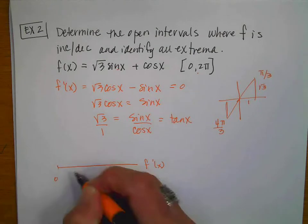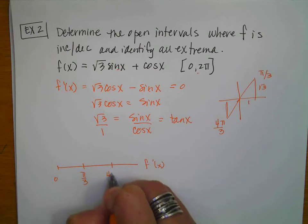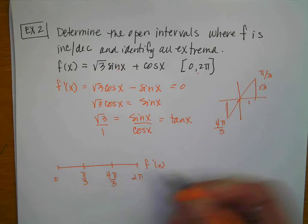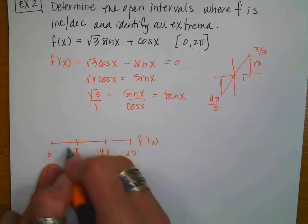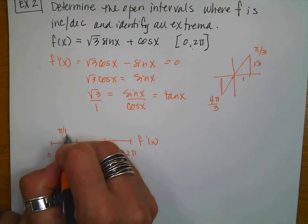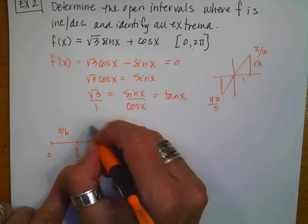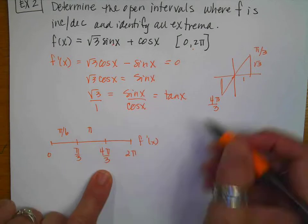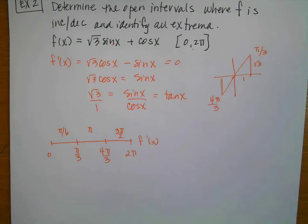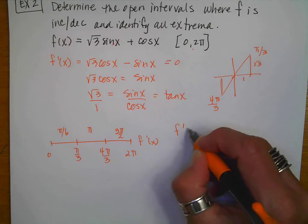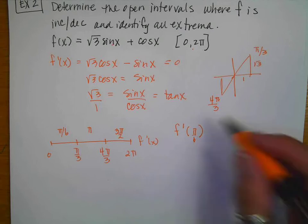This is my derivative with critical values at 0, π/3, 4π/3, and 2π. I'll choose test values: π/6 between 0 and π/3; π between π/3 and 4π/3; and 3π/2 between 4π/3 and 2π, because the math is easy.